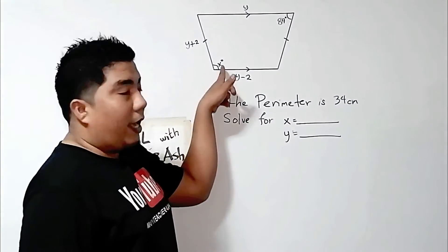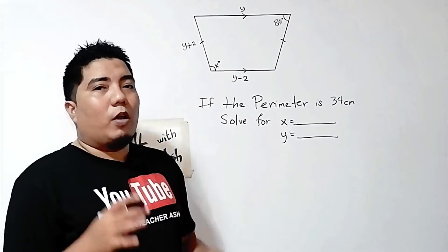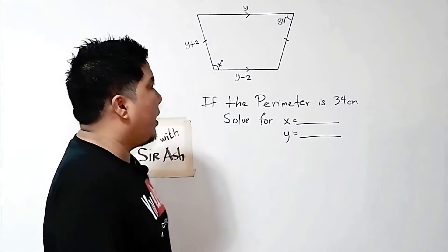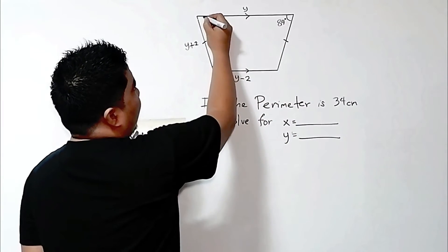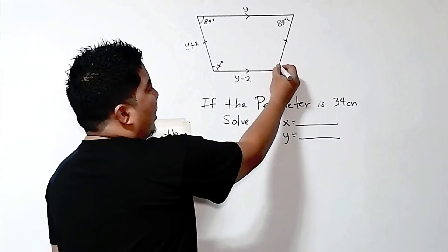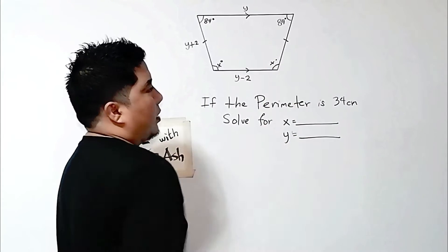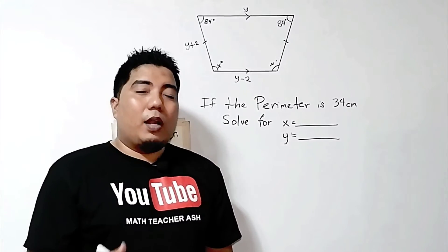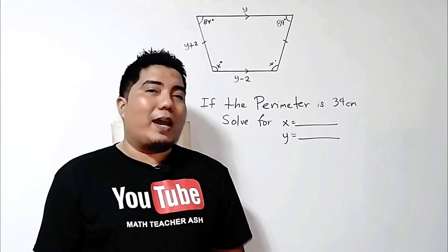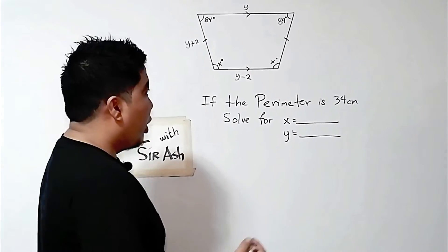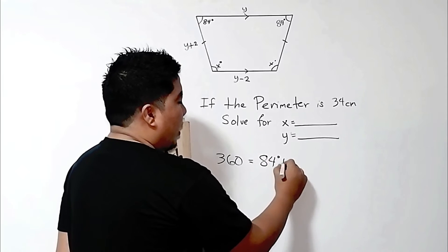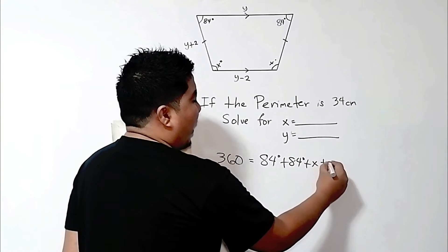Now, my dear math learners, let's start first with x. x here is an angle. If you remember the properties of an isosceles trapezoid, it states that the base angles are congruent. Now, if this is 84, this is also 84 degrees because the base angles are congruent. So if this is x, then this is also x. Always remember that the total measurement of the angles in a given quadrilateral is always 360 degrees.